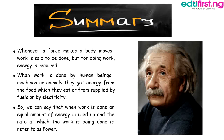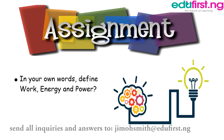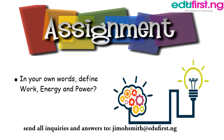Summary: whenever a force makes a body move, work is said to be done. To do work, energy is required. Humans, machines, or animals get energy from food or from electricity. When work is done, an equal amount of energy is used up, and the rate at which work is done is referred to as power. Assignment: before the next class, define work, energy, and power in your own words. See you in the next class.